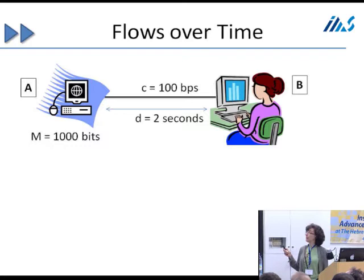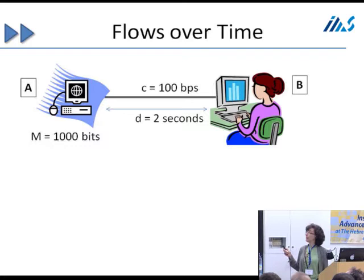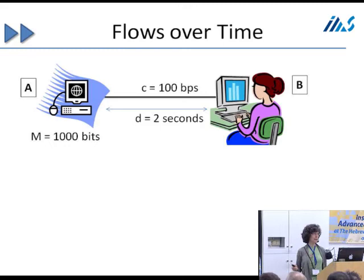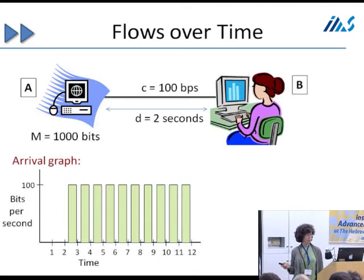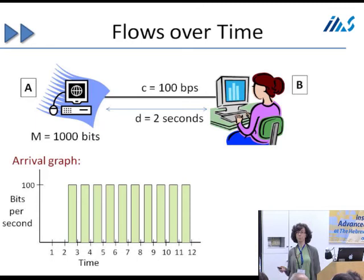For example, we might have a link that allows 100 bits per second and has a delay of 2 seconds. If we want to send 1,000 bits, then we'd have an arrival graph that looks something like this. Since the delay is 2 seconds, even if we start sending our flow at time 0, it doesn't arrive until time 2. Then at time 2 we get 100 bits per second for the next 10 seconds, finishing at time 12.